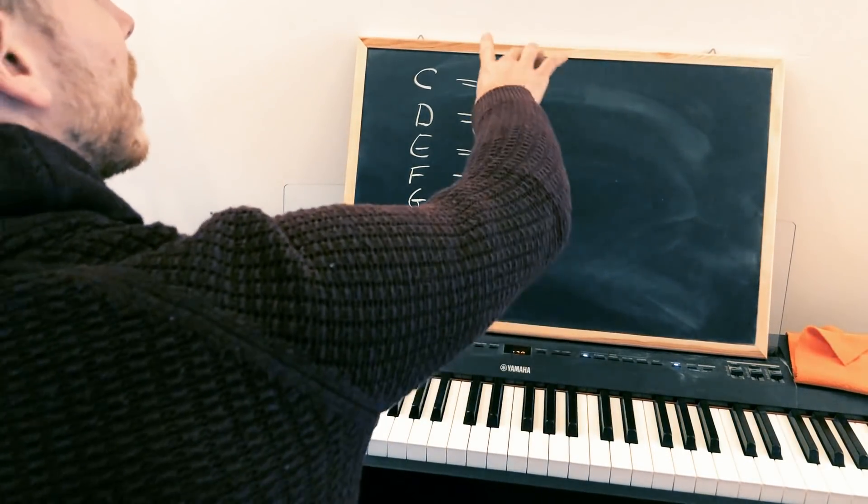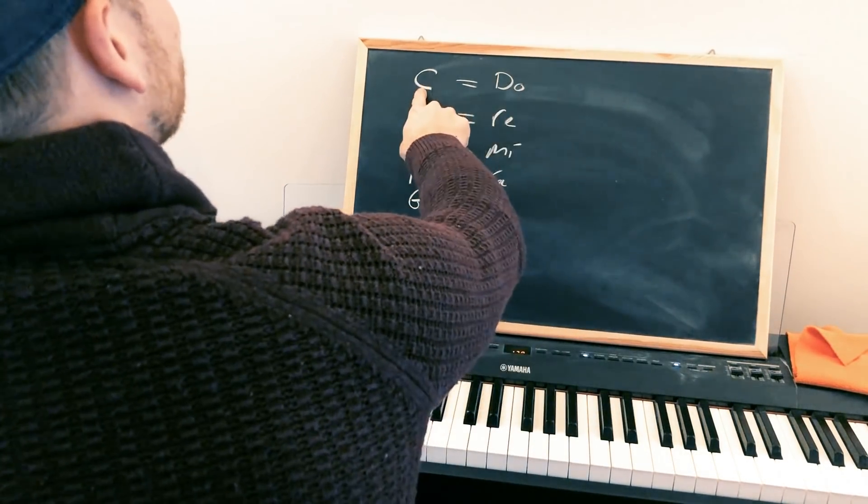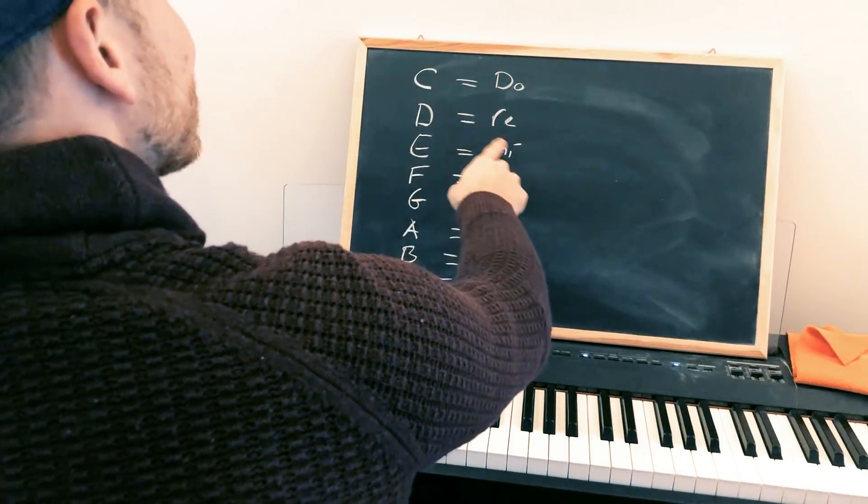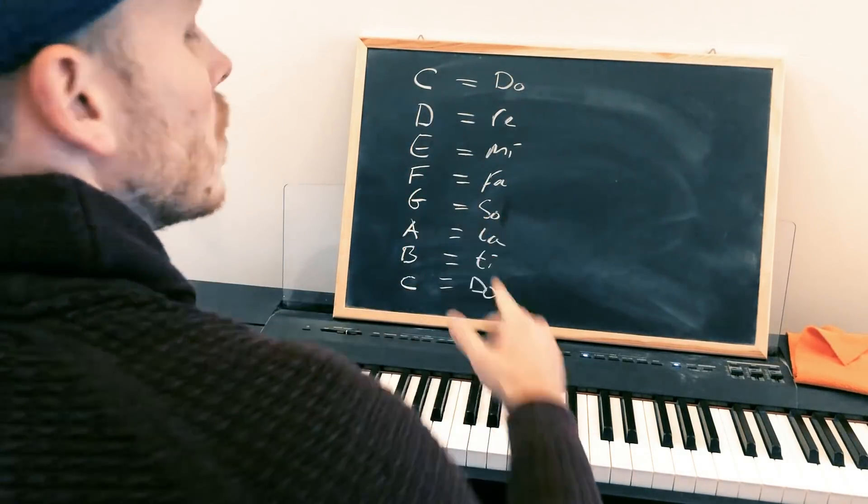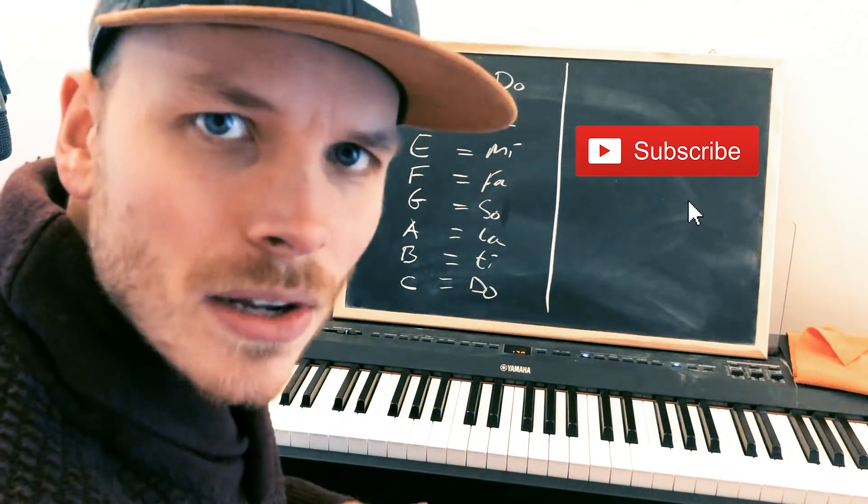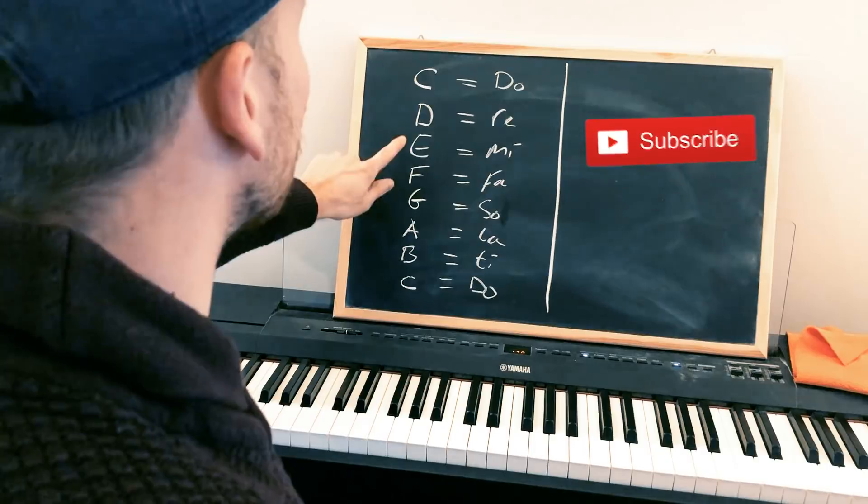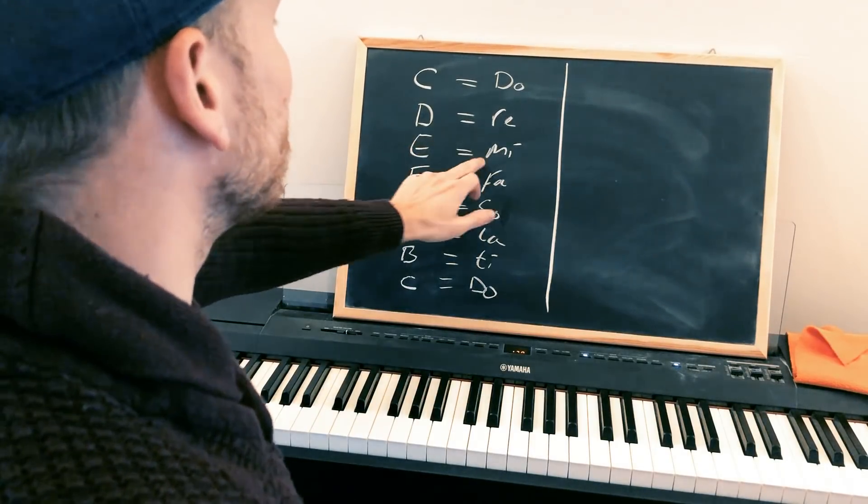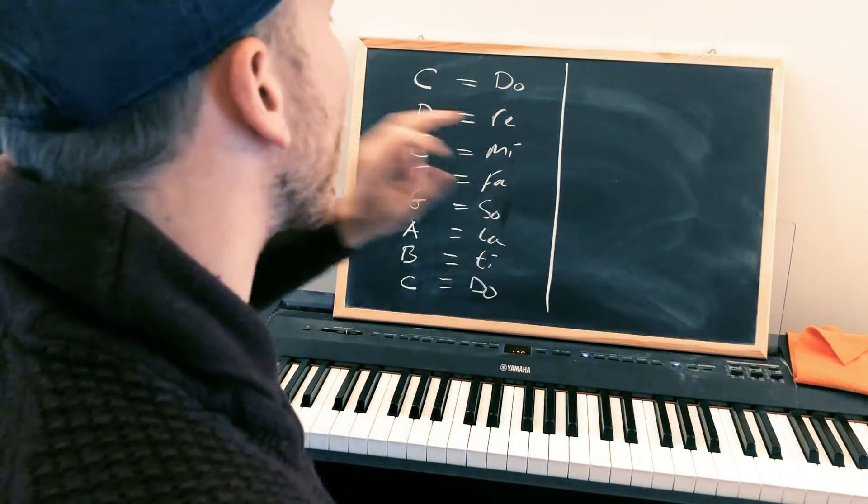So if I would put this in Do, Re, Mi, Fa, Sol, La, Ti, Do, we would have C is Do, D is Re, E is Mi, F is Fa, G is So, etc., etc.